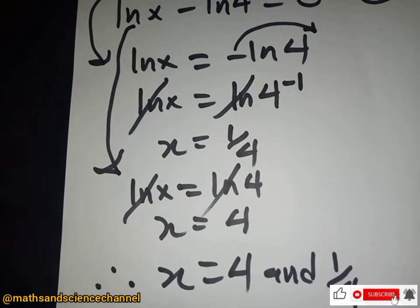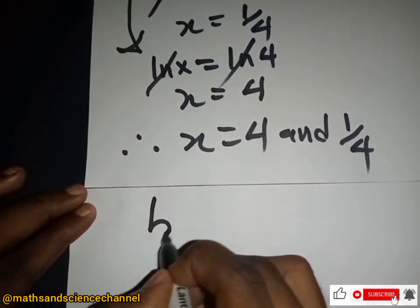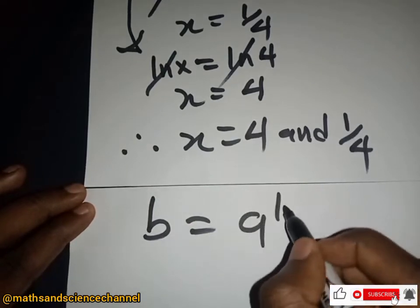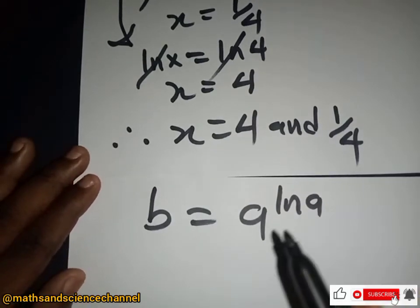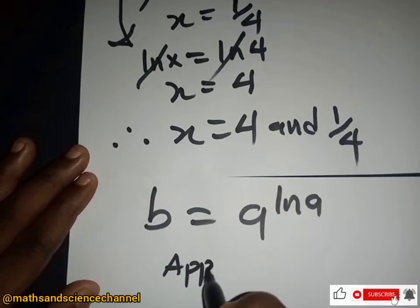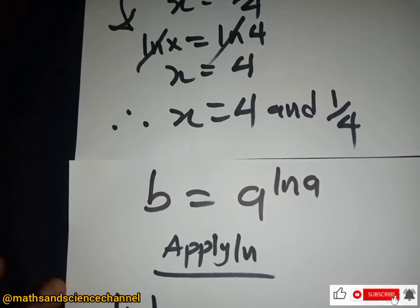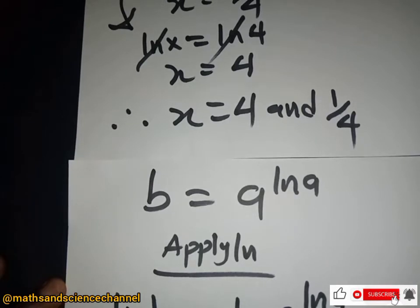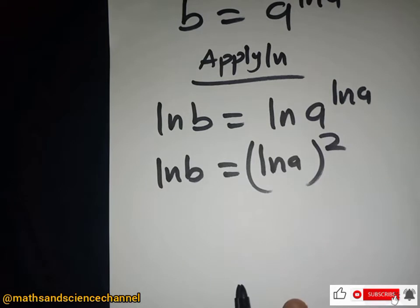Now let's do another similar one. We have b equal to a to the power ln a. We apply ln on both sides: ln b equals ln of a to the power ln a. The exponent drops down, giving ln b equals (ln a)².